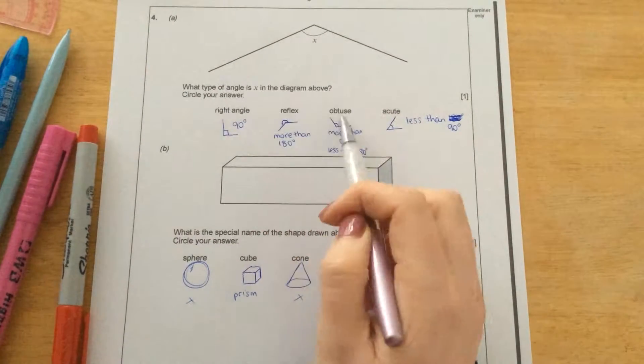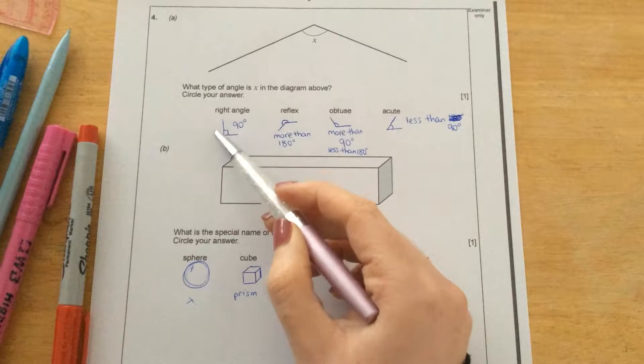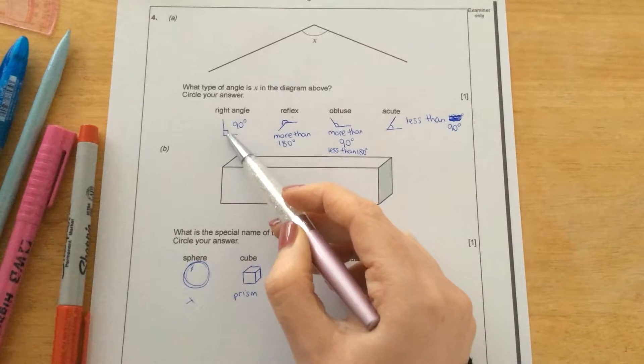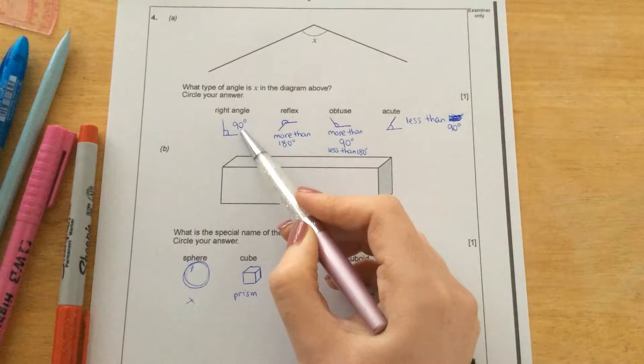So what are each of these angles? A right angle looks like this and it's shown with a little square in there. It is 90 degrees.